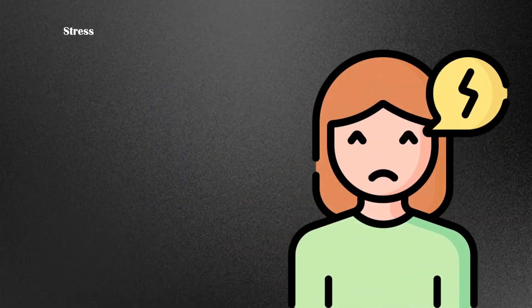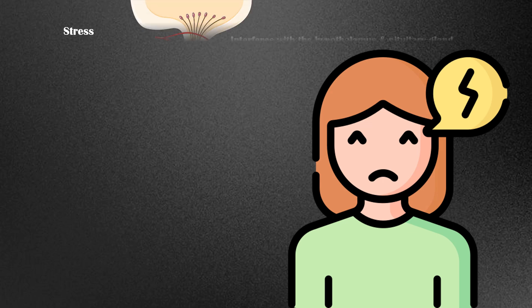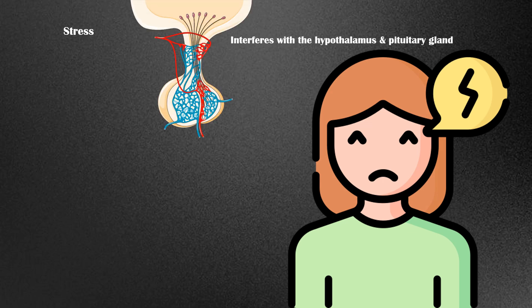Stress. Stress can interfere with the women's menstrual cycle by temporarily interfering with the hypothalamus and the pituitary gland, which secrete hormones responsible for menstruation, including GnRH, FSH, and LH hormones.